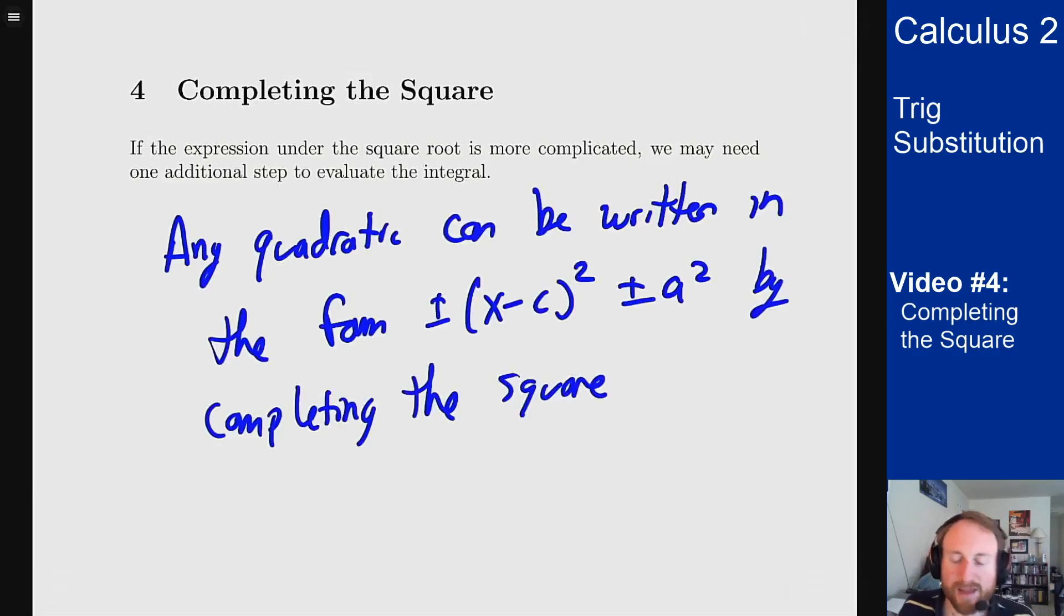And I have the weird plus minuses here because it could be positive, it could be negative, it could be any of those things, it depends on what the coefficients are in this problem. But the point is I can convert any quadratic into a form that matches my trig sub formulation by completing the square.